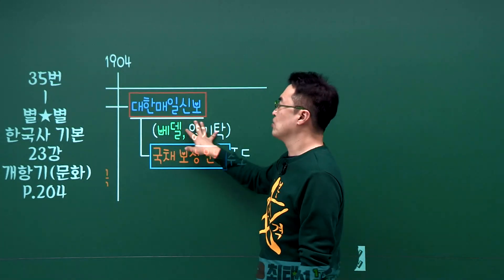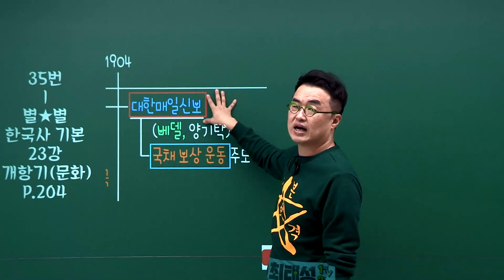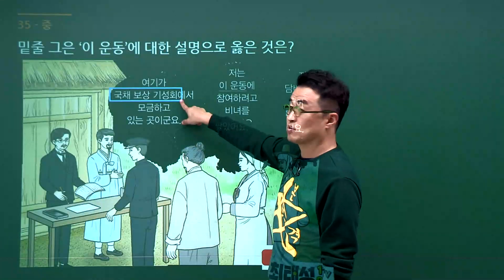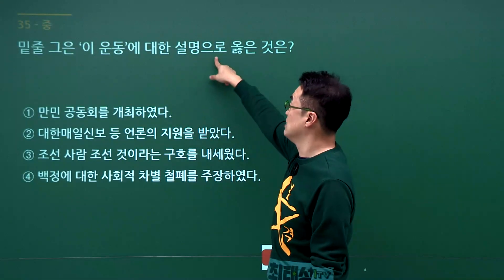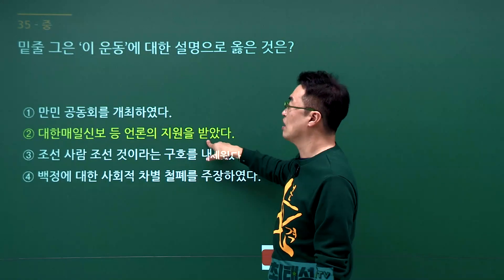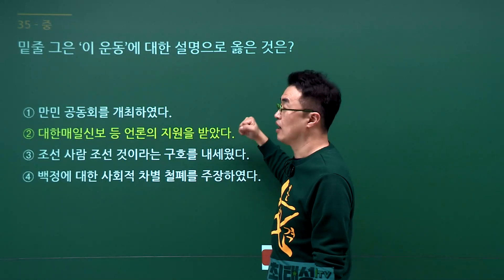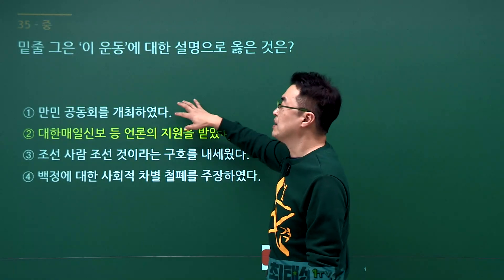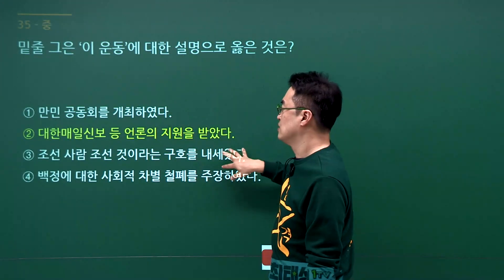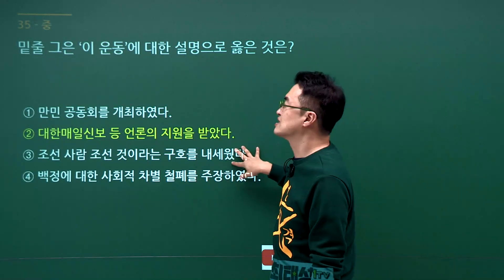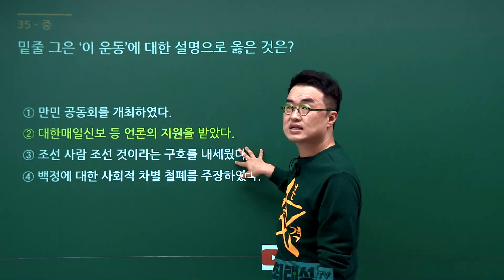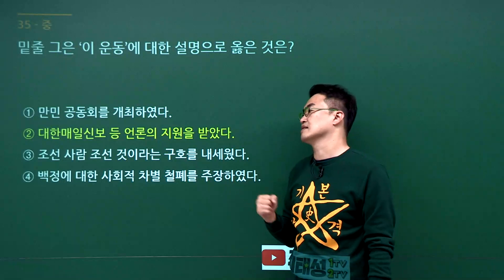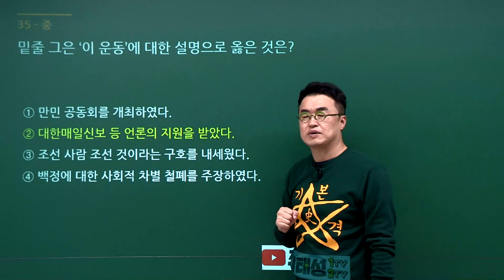국채보상운동 문제입니다. 국채보상운동에서 대한매일신보가 홍보활동을 많이 했습니다. 문제에서 이 운동에 대한 설명으로 대한매일신보의 지원이 정답입니다. 만민공동회는 독립협회, 조선 사람 조선 것은 물산장려운동, 백정에 대한 사회적 차별 철폐 주장은 형평운동으로 모두 일제강점기입니다. 정답은 2번입니다.